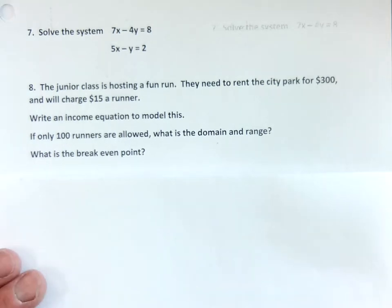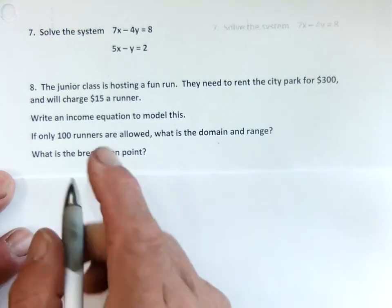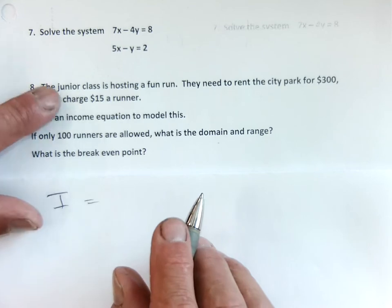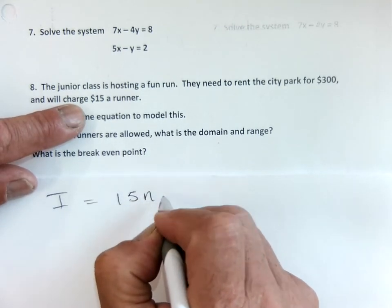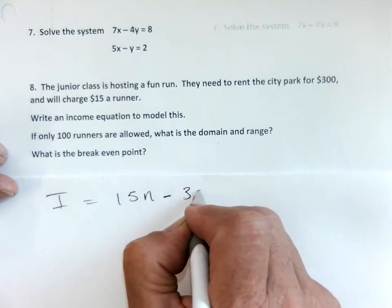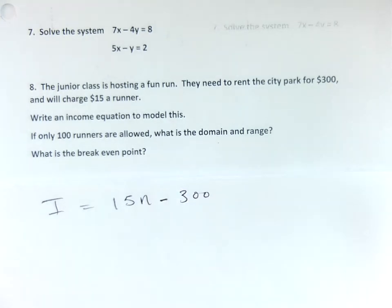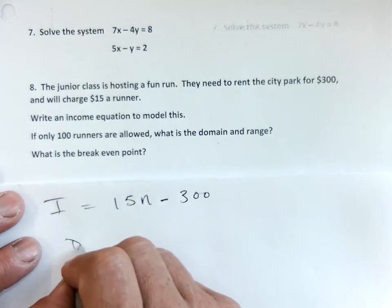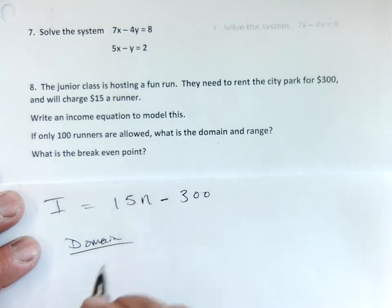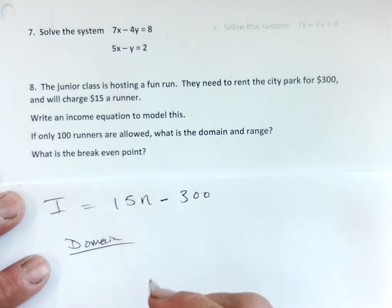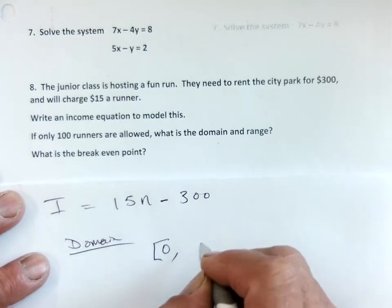Okay, so they need to rent. So for an income, to make money, they're going to have to charge $15 a runner, but you've got to rent the park, okay? You guys okay with that? No. Vincent is not. That's too much for a park. Yeah, I know. I agree. All right. If only 100 runners are allowed, what is the domain range? Okay, so 100 runners, so the domain's got to be, what's the domain, you guys? Runners, which is how many? On the x, it's a run.